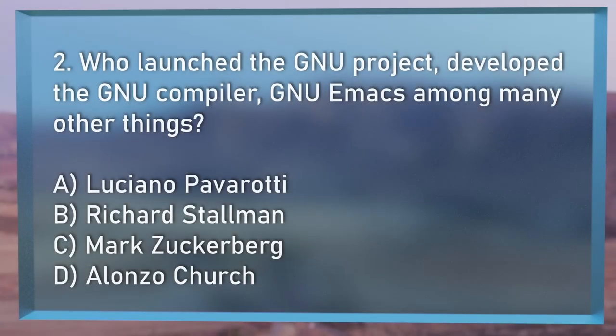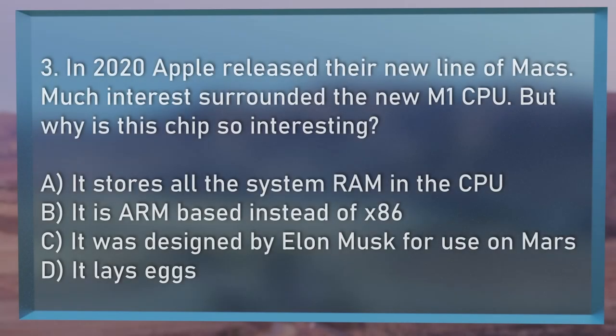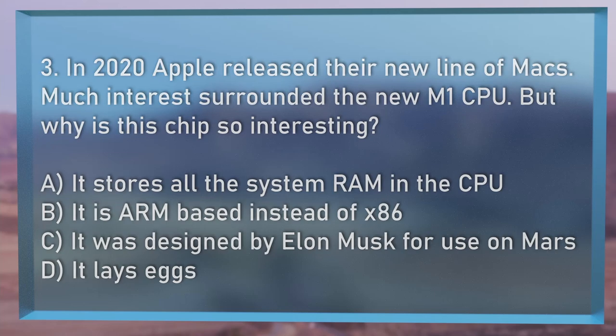Question number 2: Who launched the GNU project, developed the GNU compiler, GNU Emacs, among many other things? Was it A, Luciano Pavarotti; B, Richard Stallman; C, Mark Zuckerberg; or D, Alonzo Church? Question number 3: In 2020, Apple released their new line of Macs with the M1 CPU. But why was this chip so interesting? A, it stores all system RAM in the CPU; B, it is ARM-based instead of x86; C, it was designed by Elon Musk for use on Mars; or D, this chip lays eggs?